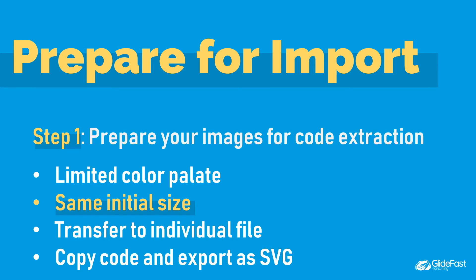Next, while vector art is awesome for resizing, you're going to save yourself a lot of heartache in the long run if you go ahead and line up your images and make sure they're all the same or similar size — especially if you're putting them in a series of items like service catalog items or knowledge base categories. After that, you'll transfer the image to an individual file where this image is the only item in the artboard in the file. This is very important to make sure that you're getting code for only what you want. Then you'll export the file as an SVG, copy the code, and save the file.